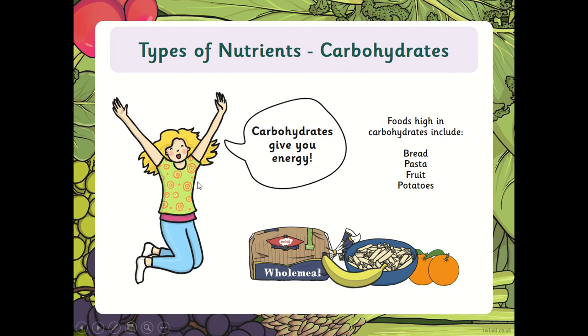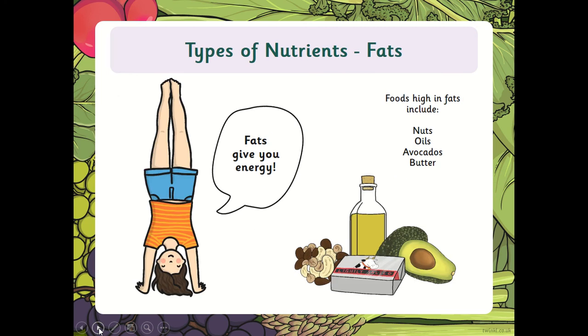We can't eat just all protein — we also need carbohydrates, because these are the ones that give us our energy. Foods that are high in carbohydrates include bread, pasta, fruit, and potatoes. This is where we get our energy.